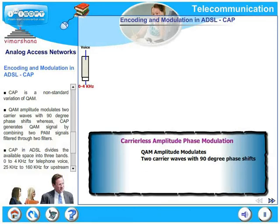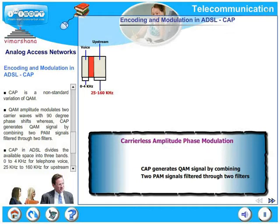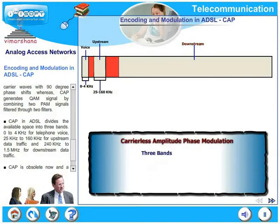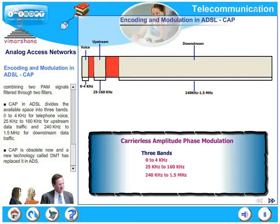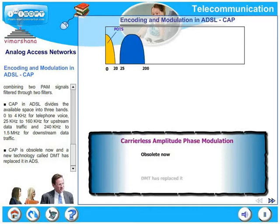CAP generates a QAM signal by combining two PAM signals filtered through two filters. This is a non-standard version of QAM. CAP in ADSL divides the available space into three bands: 0 to 4 kilohertz for telephone voice, 25 to 160 kilohertz for upstream traffic, and 240 to 1.5 megahertz for downstream traffic. CAP is obsolete now, and a new technology called DMT has completely replaced it in ADSL.